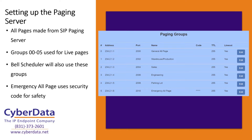One of the other features they'll be taking advantage of with the paging server is the bell scheduler. By setting up all these different groups, you can have individual bells that play to the warehouse area, or bells that play to just the sales area or engineering area. You can do that really easily by creating these different paging groups, making it streamlined as you use the additional features of the paging server.